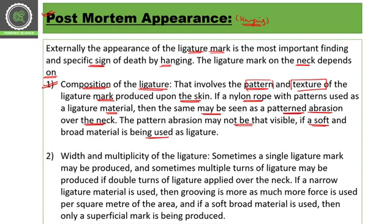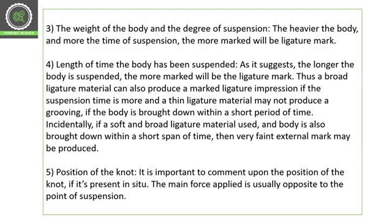The second factor is the width and multiplicity of the ligature. Sometimes there can be one, two, three, or four rounds of ligature around the neck — sometimes a single ligature mark is produced and sometimes multiple turns produce multiple marks. If a narrow ligature material is used, grooving is more prominent as more force is applied per square meter of area. If a soft, broad material is used, only a superficial mark will be produced.